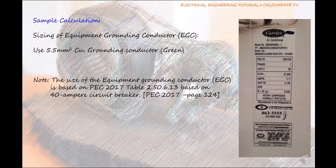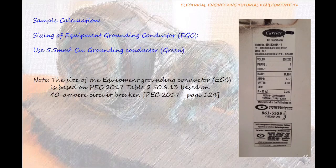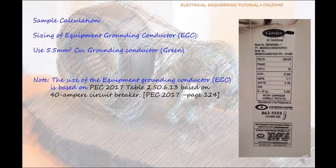Sizing of Equipment Grounding Conductor, EGC. Use 5.5 square millimeters copper grounding conductor, green. Note: The size of the Equipment Grounding Conductor (EGC) is based on PEC 2017 Table 2.50.6.13 based on 40 ampere circuit breaker, PEC 2017 Page 124.